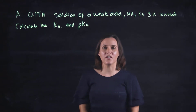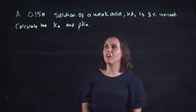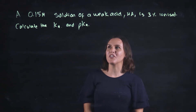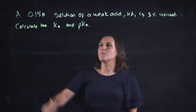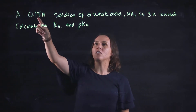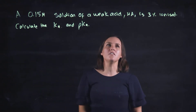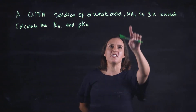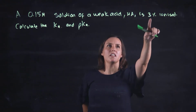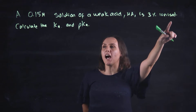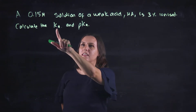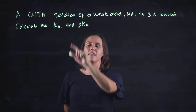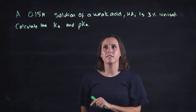Welcome to another video. Today we're going to be looking at a weak acid. This is a 0.1 molar solution of HA that is 3% ionized, and we want to calculate the Ka and the pKa.